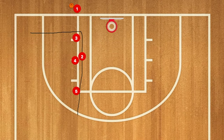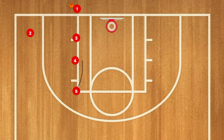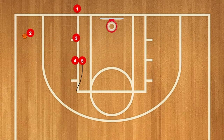Hello basketball coaches. First, in this play, two will use five and four as a screen and pop out to the left wing. One will inbound the ball to him.